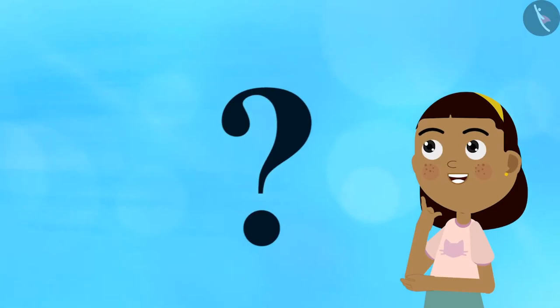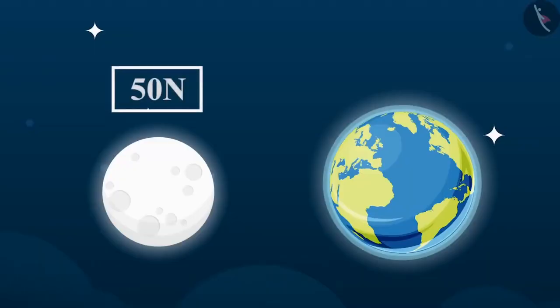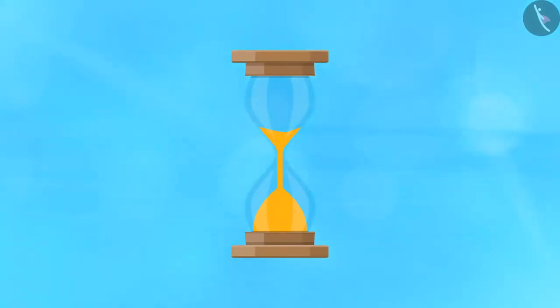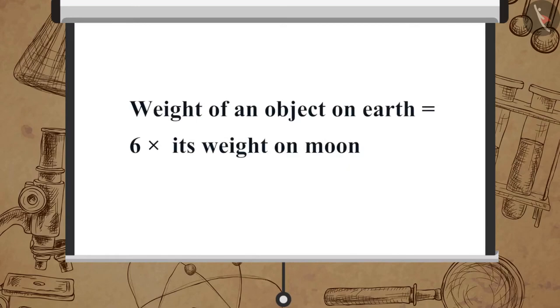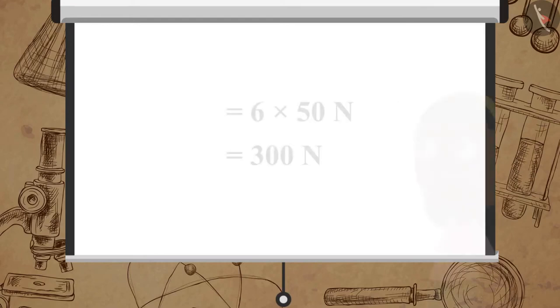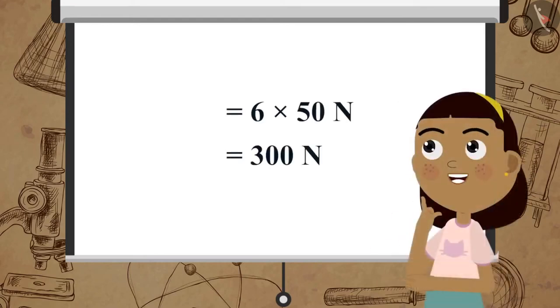Now let us solve a problem together. The weight of an object on the Moon is 50 Newton. How much will the object weigh on the Earth? Pause this video and make your calculations. Using W_m upon W_e equal to 1 upon 6, the weight on Earth equals 6 multiplied by the weight on the Moon, which is 6 multiplied by 50 Newton, equal to 300 Newton.